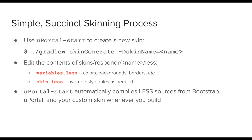uPortal Start automatically compiles these Less files, combining them with Bootstrap sources from a web jar and sources from uPortal itself. We offered Less compilation in uPortal 4 as well, but the uPortal 5 version has improvements. Instead of checking Bootstrap sources directly into the uPortal repository, all Bootstrap technology now comes from a web jar downloaded from Maven Central. Also, the previous solution used a Less Maven plugin which often didn't support the latest version of Less. The new approach uses Node directly with the native Less compiler.